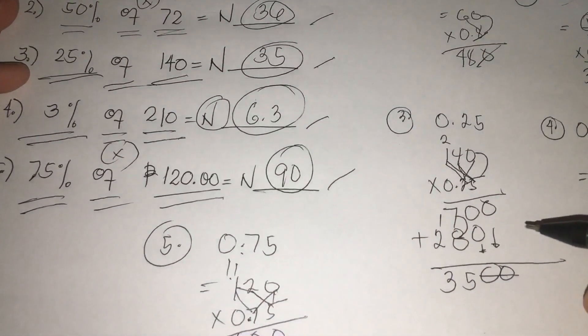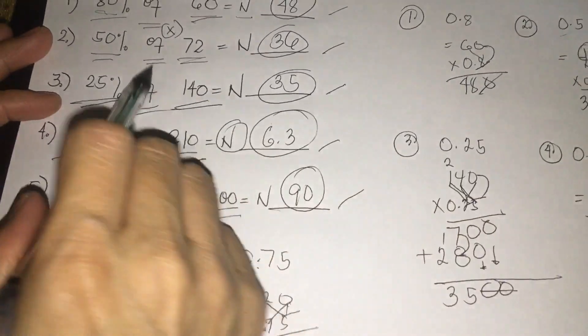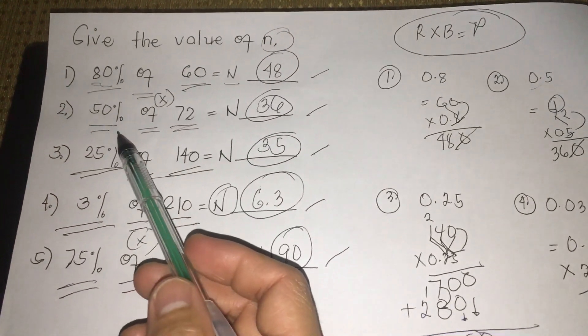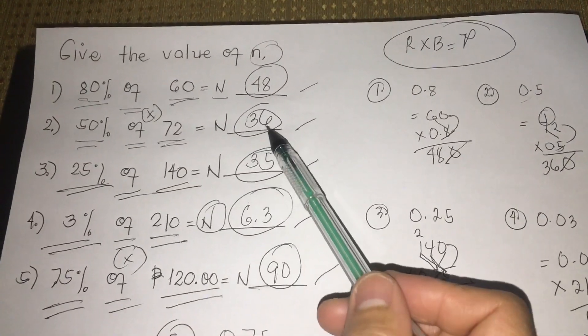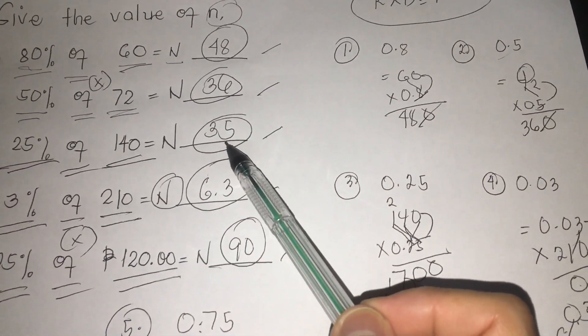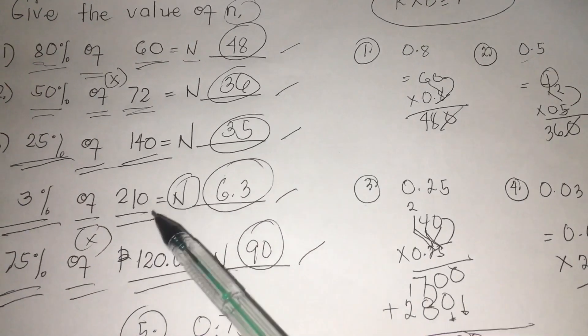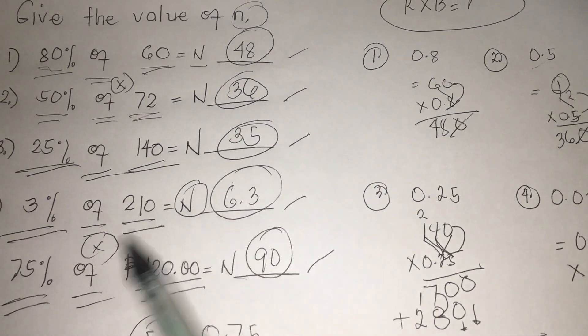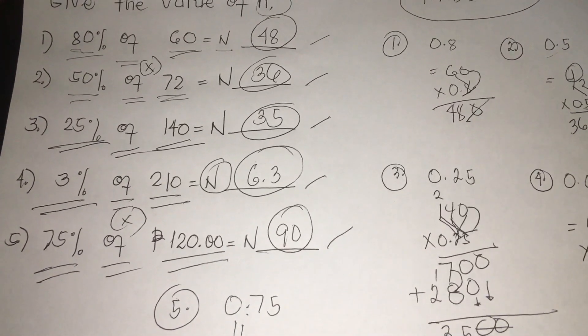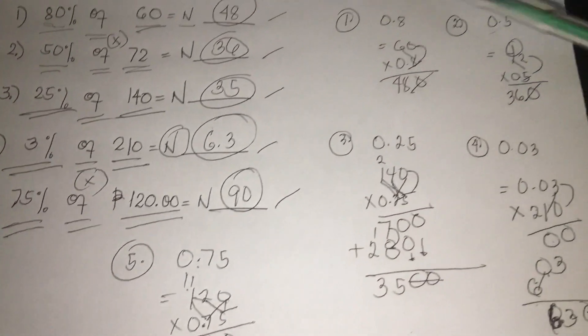Again: 80% of 60 is 48, 50% of 72 is 36, 25% of 140 is 35, 3% of 210 is 6.3, 75% of 120 is 90. So we have our proper solutions from 1, 2, 3, 4, 5.